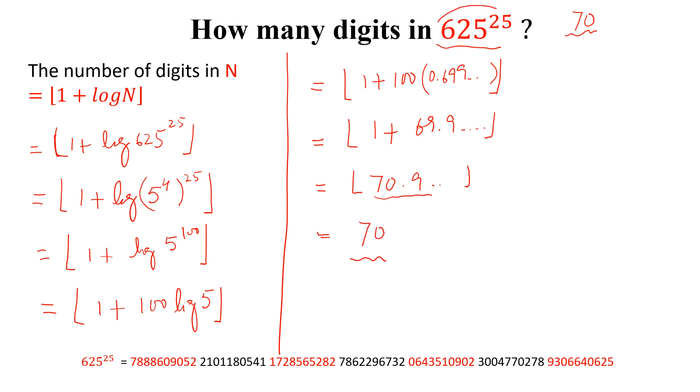So, the number of digits in this number 625 to the power 25 is 70. And here are the numbers you can count. These numbers are equal to 70. Like the video, share with your friends and don't forget to subscribe my YouTube channel. Thank you.